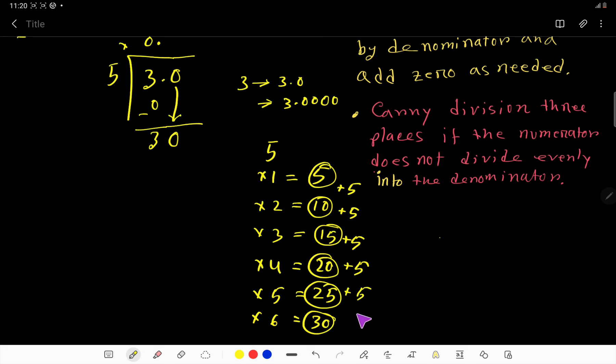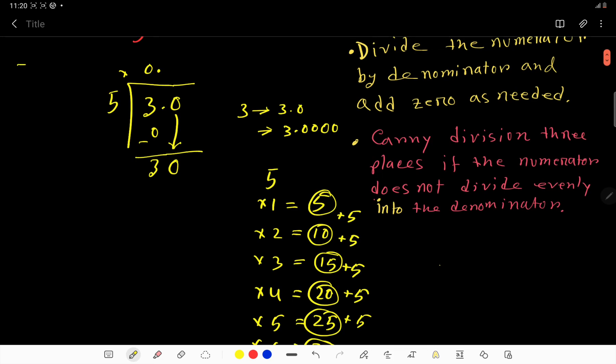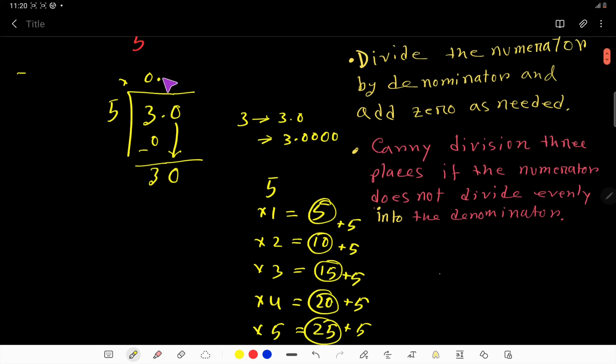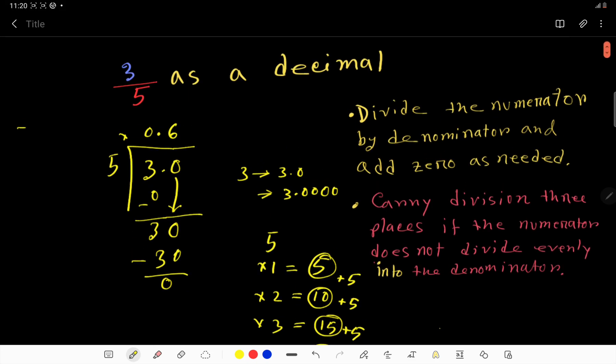So 5 goes into 30 how many times? 6 times, which gives us 30. 6 times 5 is 30. If you subtract, you get 0. So the remainder is 0. Therefore, 3 over 5 as a decimal is 0.6.